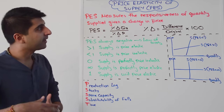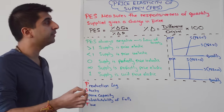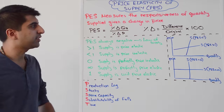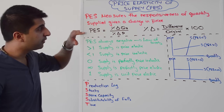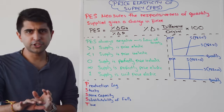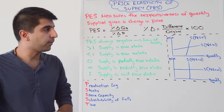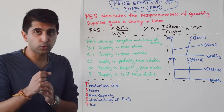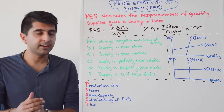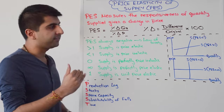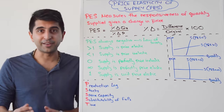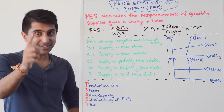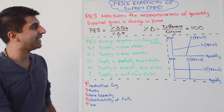PES measures the responsiveness of quantity supplied given a change in price. Here is the equation, just like the PED equation but now for supply. So the percentage change in quantity supplied over the percentage change in price. Just remember your Q before your P.